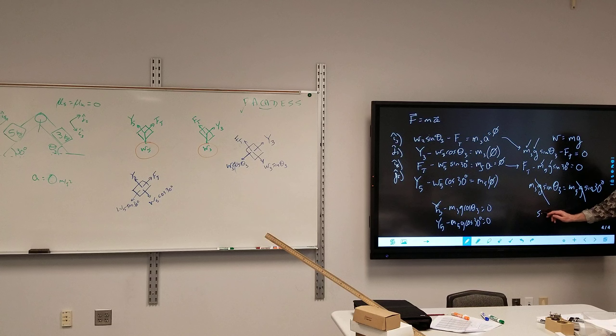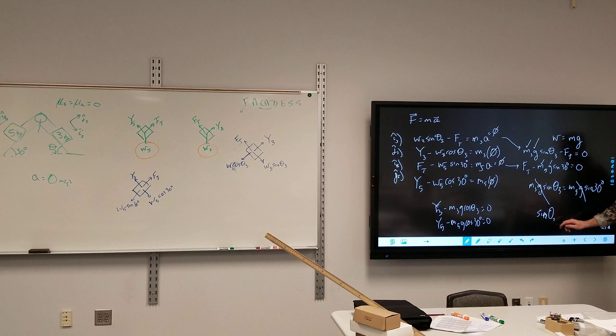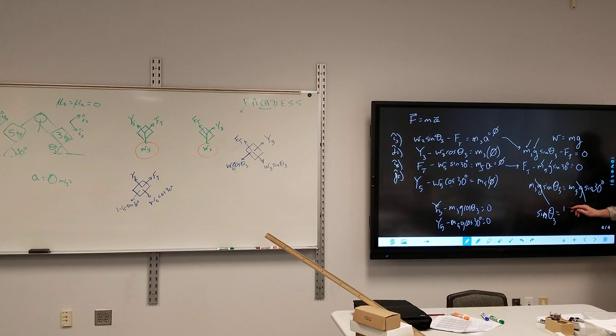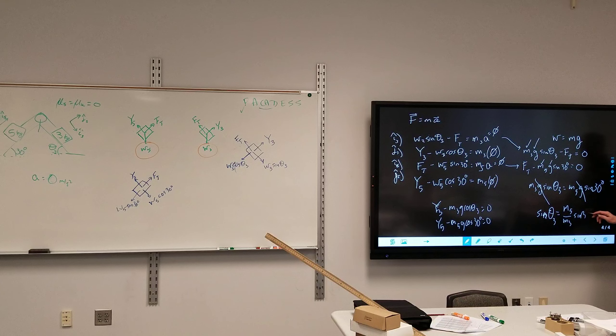And I'm left with the sine of theta 3 is equal to M5 over M3 times sine of 30 degrees.